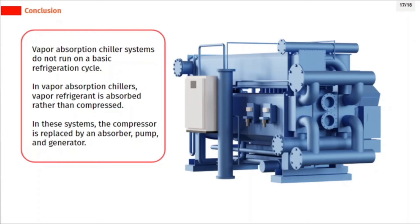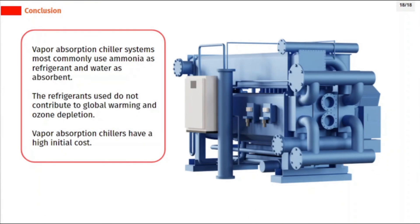In summary, vapor absorption chiller systems do not run on a basic refrigeration cycle. In these systems, the compressor is replaced by an absorber, pump, and generator. They most commonly use ammonia as refrigerant and water as absorbent. The refrigerants used do not contribute to global warming and ozone depletion.